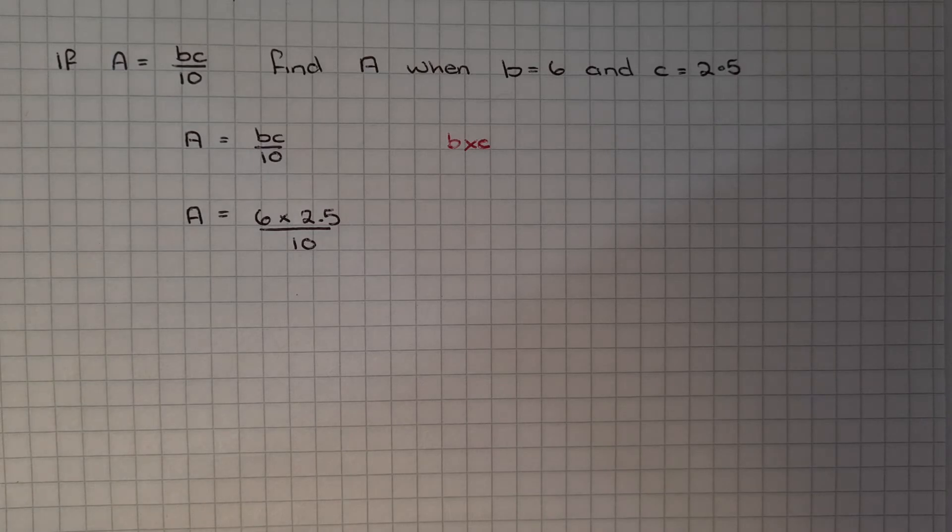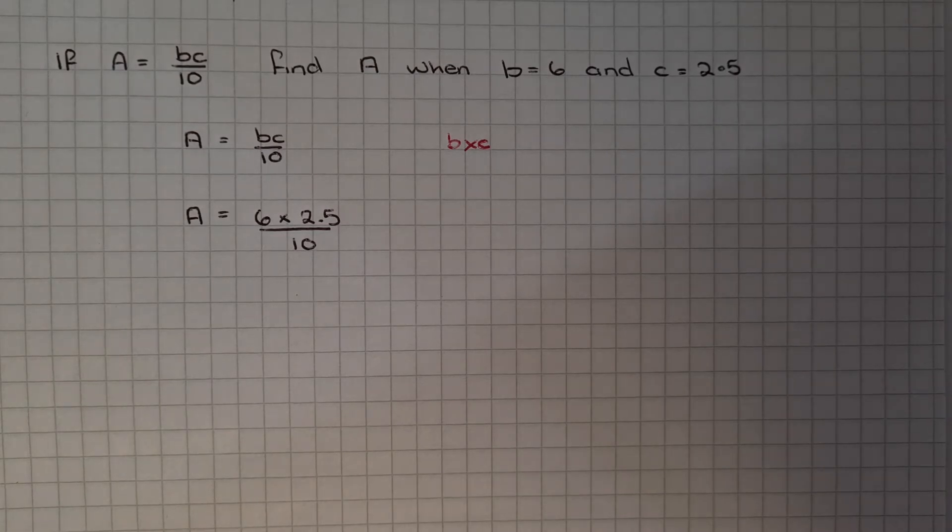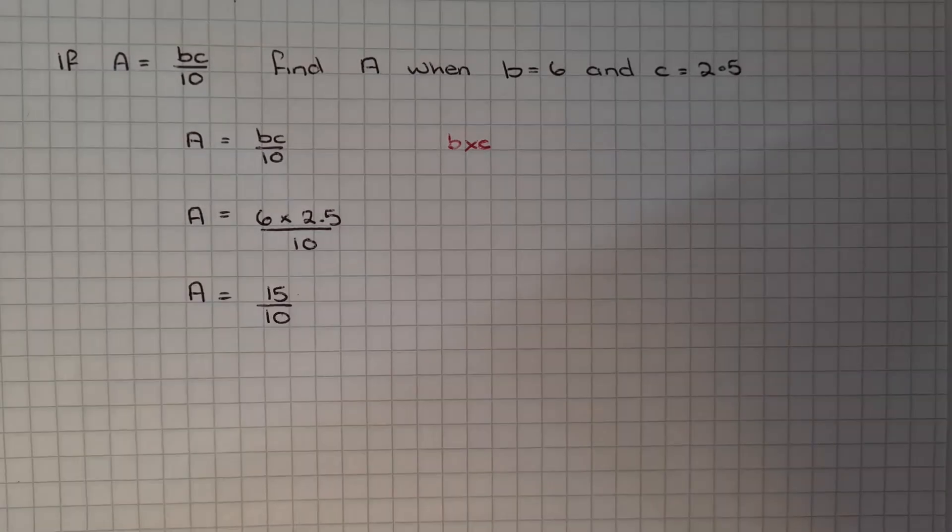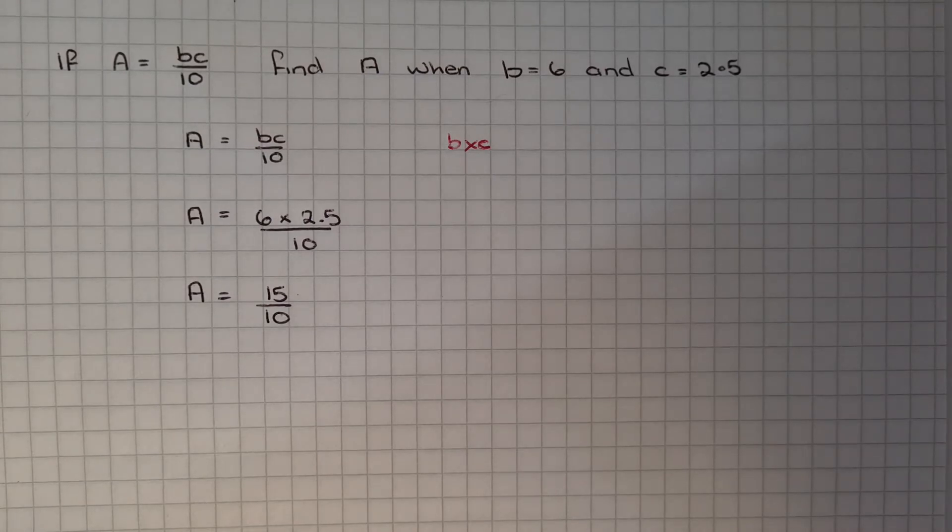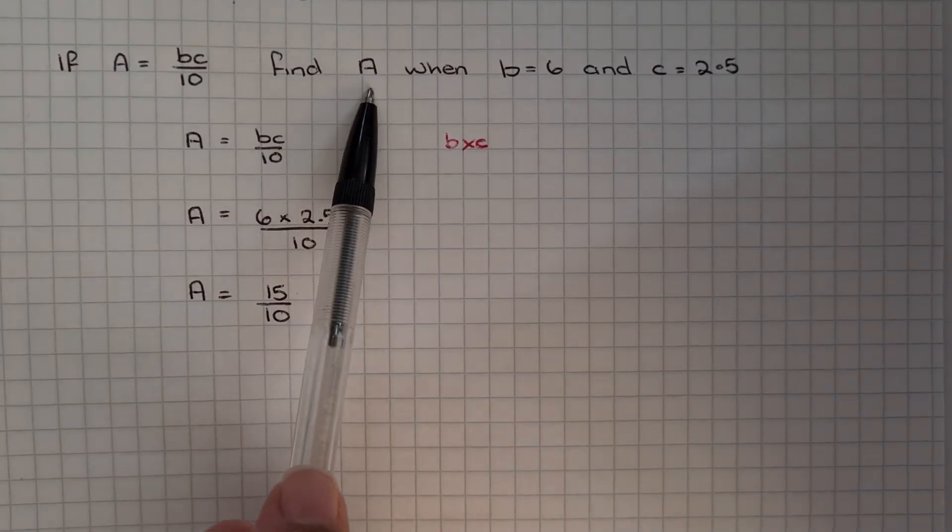Using BODMAS, we're going to calculate the answer. Doing the multiplication first, 6 times 2.5 is 15. So we end up with 15 over 10. And we were asked to find out what A is.